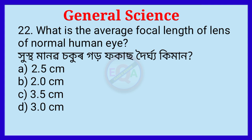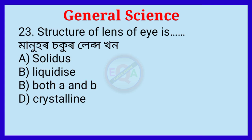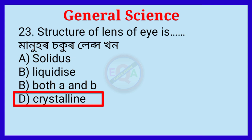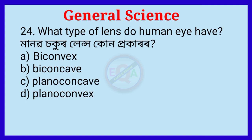Question number 23. Structure of lens of eye. Question number 24. What type of lens does the human eye have? Manabhsukur lens koon pukara?